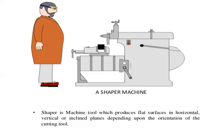If you have flat surfaces or irregular surfaces, you can use the shaper machine. The machine works on horizontal, vertical, and inclined planes depending upon the cutting tool orientation. By changing the cutting tool and arranging it appropriately, different surface operations can be performed.